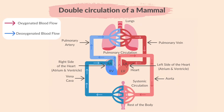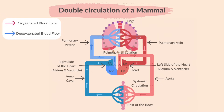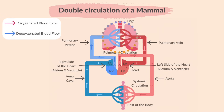De-oxygenated blood enters the right atrium, labelled as RA on the diagram, via the vena cava. Then it moves into the right ventricle. Next, the de-oxygenated blood is pumped by the right ventricle to the lungs to become oxygenated. The pulmonary artery carries this blood away from the heart. Gas exchange happens at the lungs and the de-oxygenated blood becomes oxygenated blood.